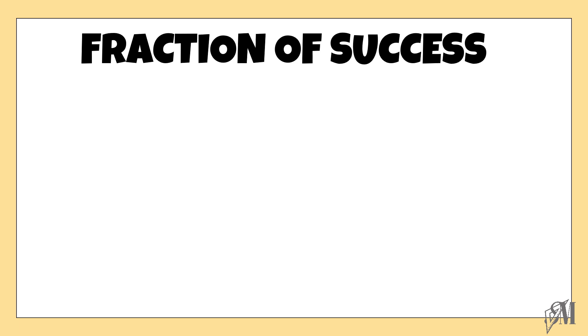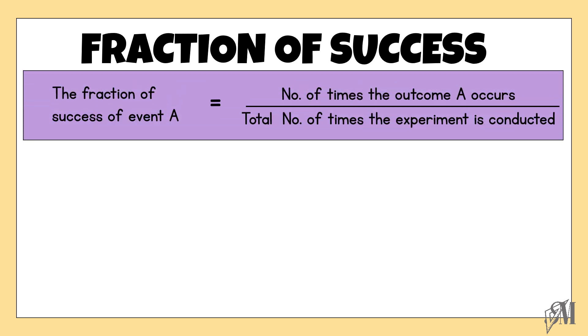The next part of this lesson is to study the fraction of success. The formula for fraction of success can be given as this: the fraction of success of an event A is equal to the number of outcomes of A over the total number of experiments conducted.